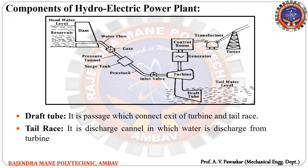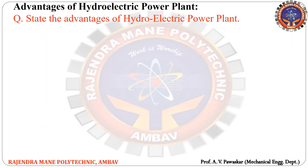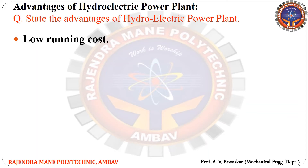Now we will discuss the advantages of the hydroelectric power plant. A question can be asked in the exam: state the advantages of the hydroelectric power plant. The first advantage is low running cost — the capital cost of a hydroelectric power plant is comparatively high, but its operation cost is very less, so the cost of power generation per unit is low.